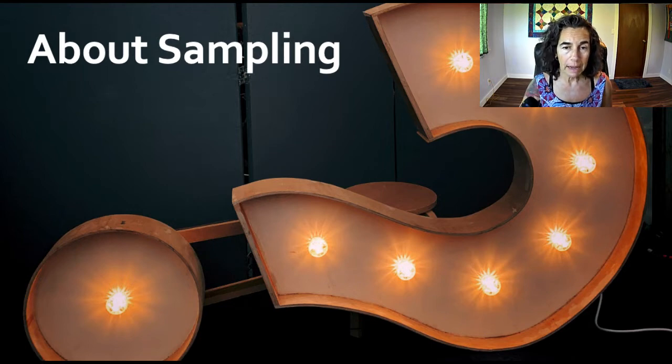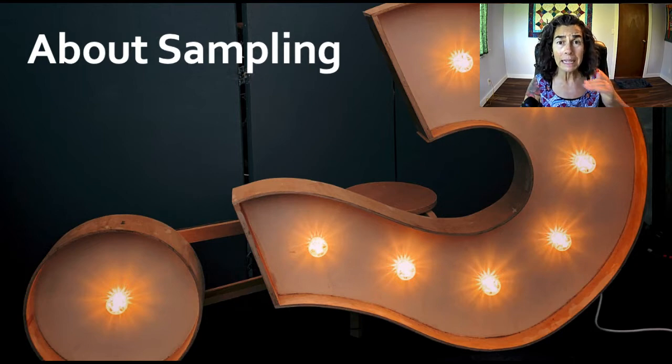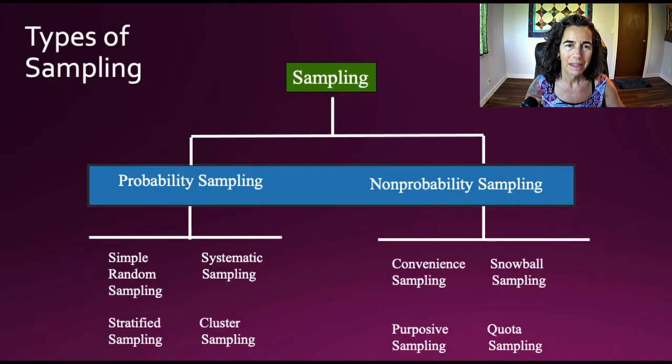Inclusion criteria is a set of characteristics or variables that determine if a person can participate in a study, and exclusion criteria is a set of criteria that eliminates potential participants from a study. So some common exclusion criteria may be if you have a survey, but your participant does not speak or write English, they may not be able to actually be a part of the study. And so they would be excluded. In some studies, it's people with particular conditions. There's a variety of exclusion criteria.